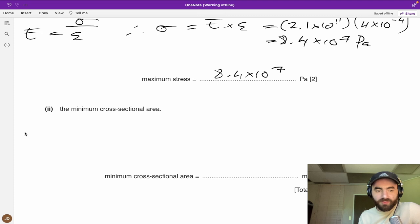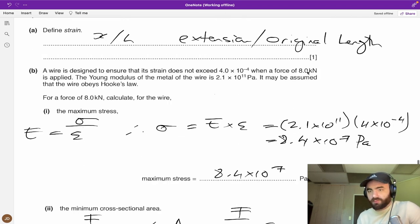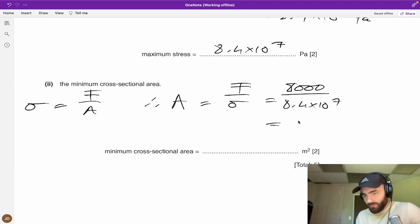Find the minimum cross-sectional area. Well, stress equals force over area. Therefore area equals force over stress. If we want this cross-sectional area to be minimum, well this will occur when the stress is at the maximum. As this increases to maximum, the area will decrease to minimum. They're inversely proportional. This is just 8k, which is 8000 newtons, divided by the maximum stress, which is 8.4 times 10 to the 7, equals 9.5 times 10 to the negative 5 meters squared.